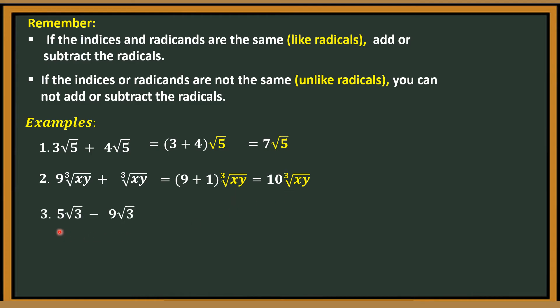Number 3: 5 square root of 3 minus 9 square root of 3. The index is the same and the radicand is the same. Therefore, we can combine them. So, 5 minus 9, copy square root of 3. 5 minus 9 is negative 4, so the answer is negative 4 square root of 3.